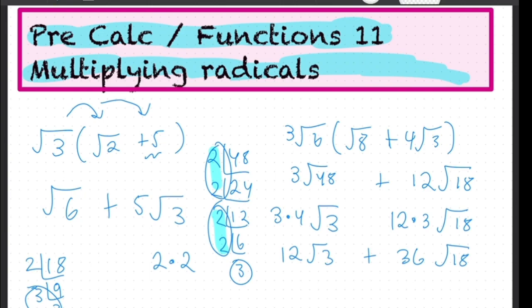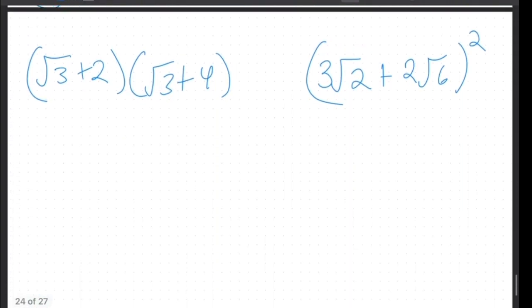Or sorry, not 18, 2. So we were able to bring one of the 3's out, but one of the 2's remains. So the 2 would stay here. So yeah, initially we did 6 times 3, which was the 18. And then we simplified the 18 down to get that. Okay?